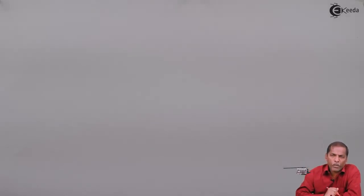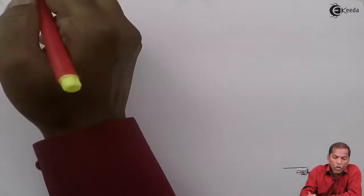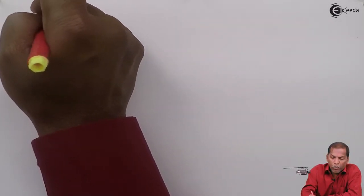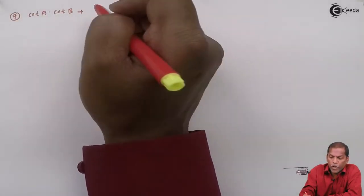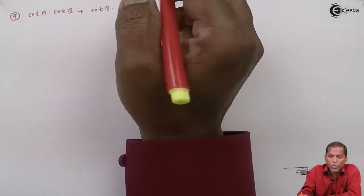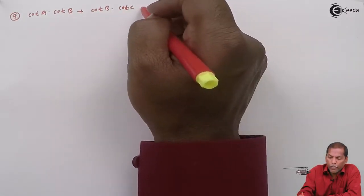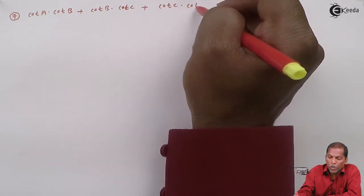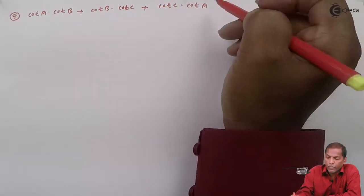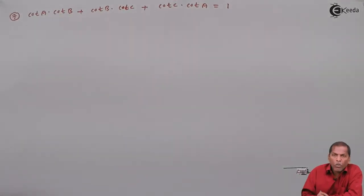Now, let's see question number 7 of topic factorization formulae. In question 7, we have to prove that cot A · cot B + cot B · cot C + cot C · cot A is equal to 1. Let's see the solution.